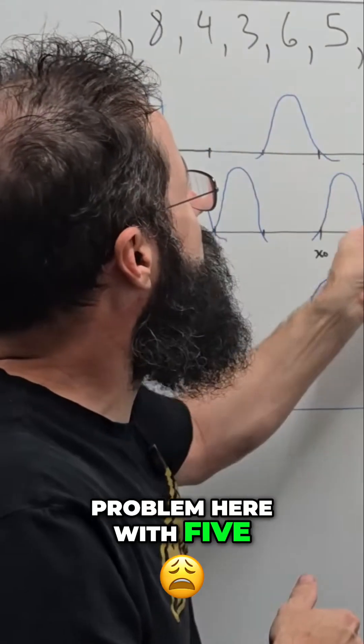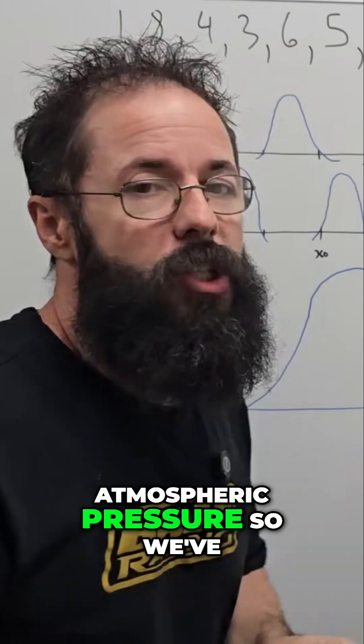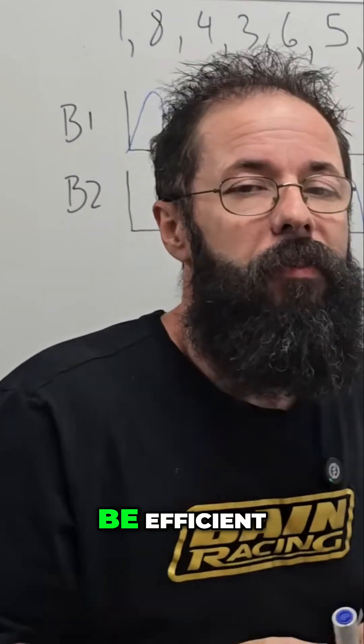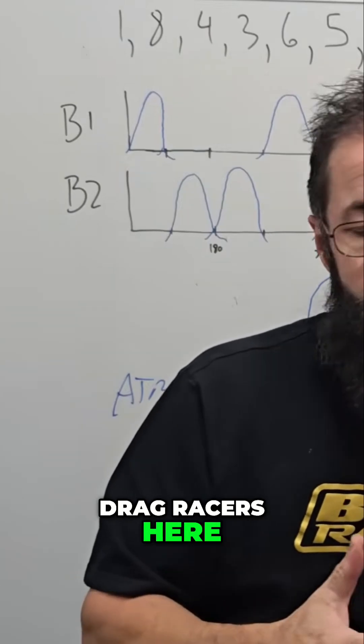And this is the problem here with five and seven: the crossover is above atmospheric pressure so we've lost pressure differential, meaning it's not going to be efficient. And I actually helped one of the Australian drag racers here, they